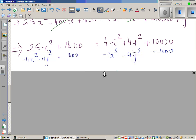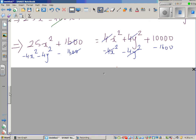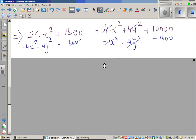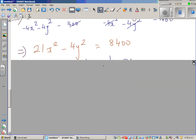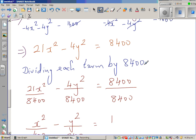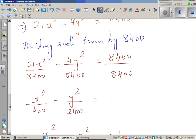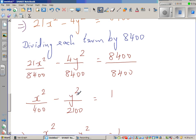We are almost there. So now you are taking away 4x from this side, 4y from this side and 1600 from this side. So what remains on the left hand side is 21x² - 4y² = 8400. The next step is dividing by 8400. So if you divide each by 8400 you get x²/400 - y²/2100 = 1. And this, writing in the standard form of a hyperbola, is nothing but the equation of a hyperbola.